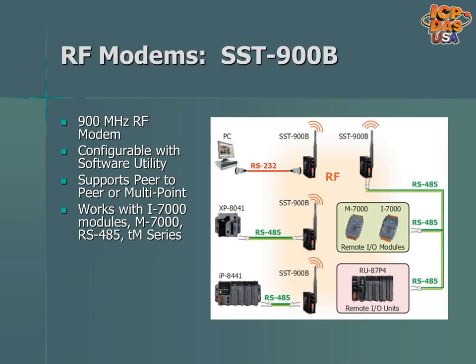SST-900B operates over the 900 MHz band, supports peer-to-peer and multipoint topologies, and RS-485 and Modbus RTU devices. A PC or controller like the XP-8041 or IP-8441 can be connected to an SST-900B RF modem, and it can communicate wirelessly to I/O modules or I/O racks if another SST-900B RF modem is connected to them and is configured to be in the same network. If an environment has a lot of Wi-Fi networks and ZigBee devices, 2.4 GHz devices may not work well if added, so 900 MHz devices would be better since they would have less interference in the wireless band.